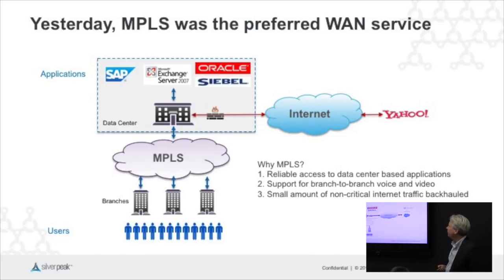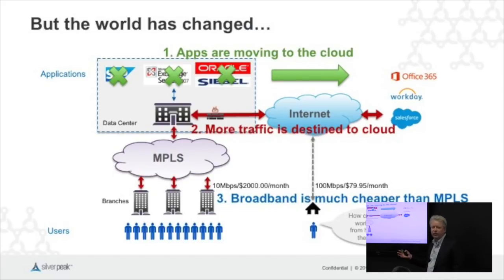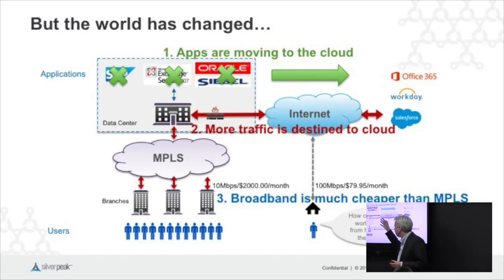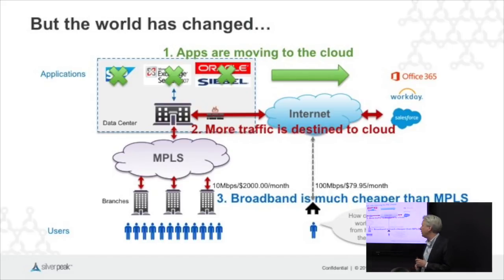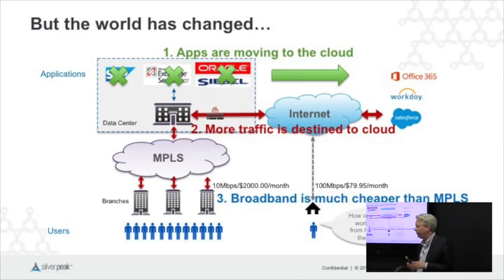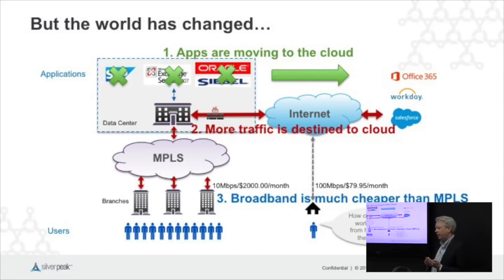Made sense at the time, but lots of things have changed since then. Apps are moving to the cloud, driving traffic to the cloud. At the same time, broadband is so much cheaper than MPLS. At work you're connected by 10 megabit per second MPLS and IT is paying $2,000 a month or whatever it may be. The same user goes home and is connected to 100 megabits for $79.95. Office 365 is working much better from home — how come? People are really now questioning why they're tied to MPLS and how to use the internet if all their applications are already on it.